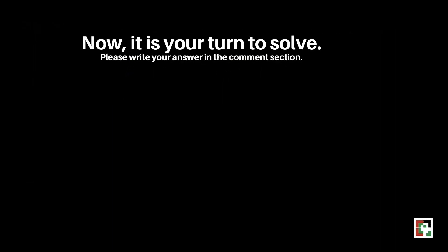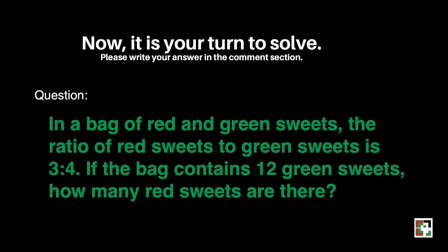Now, it is your turn to solve. Please write your answer in the comment section. The question is, In a bag of red and green sweets, the ratio of red sweets to green sweets is 3 is to 4. If the bag contains 12 green sweets, how many red sweets are there? Don't forget to write your answer. I'll be waiting for it. Thank you!